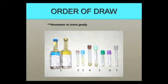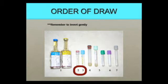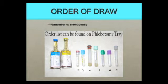When collecting multiple tubes, the order of collection is very important. If blood cultures are ordered, they must be drawn first. A clear top tube must always be drawn before a light blue tube for coagulation testing. The rest of the tubes needed are drawn in the order shown in this picture.